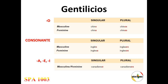When the adjective of nationality ends in a consonant, we also have four forms. The masculine singular ends with the consonant, and for the feminine you add the letter A. For example, English: inglés, inglesa. When talking about English men we say ingleses; when talking about English women, we also say inglesas. So: inglés, inglesa, ingleses, inglesas.